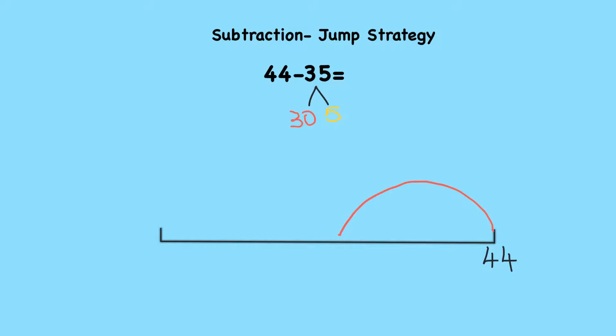I'm going to take 30 away from 44. I'm going to do a big jump to show that I'm taking away 30 from 44. If I take away 30 from 44, I'm left with 14. So I've taken away 30 from 44 and I'm left with 14.